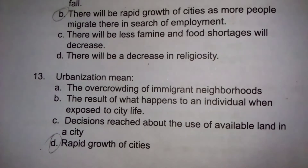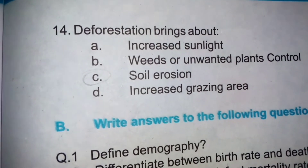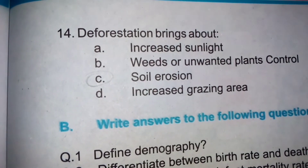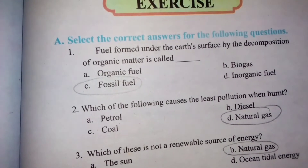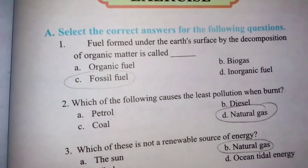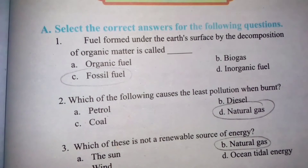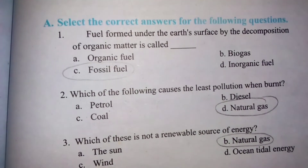Deforestation کی وجہ سے soil erosion ہوتی ہے — زمین کی کٹاؤ۔ Fuel formed under the earth's surface by the decomposition of organic matter is called fossil fuel.